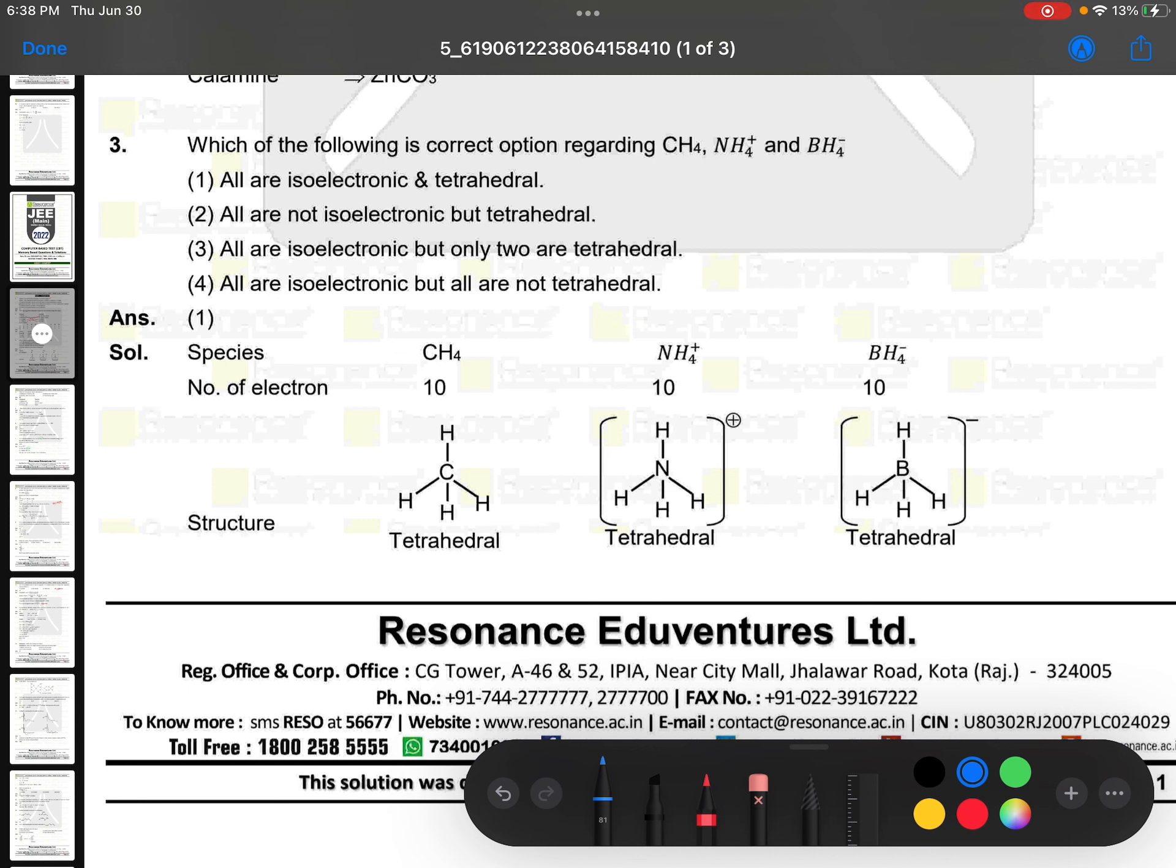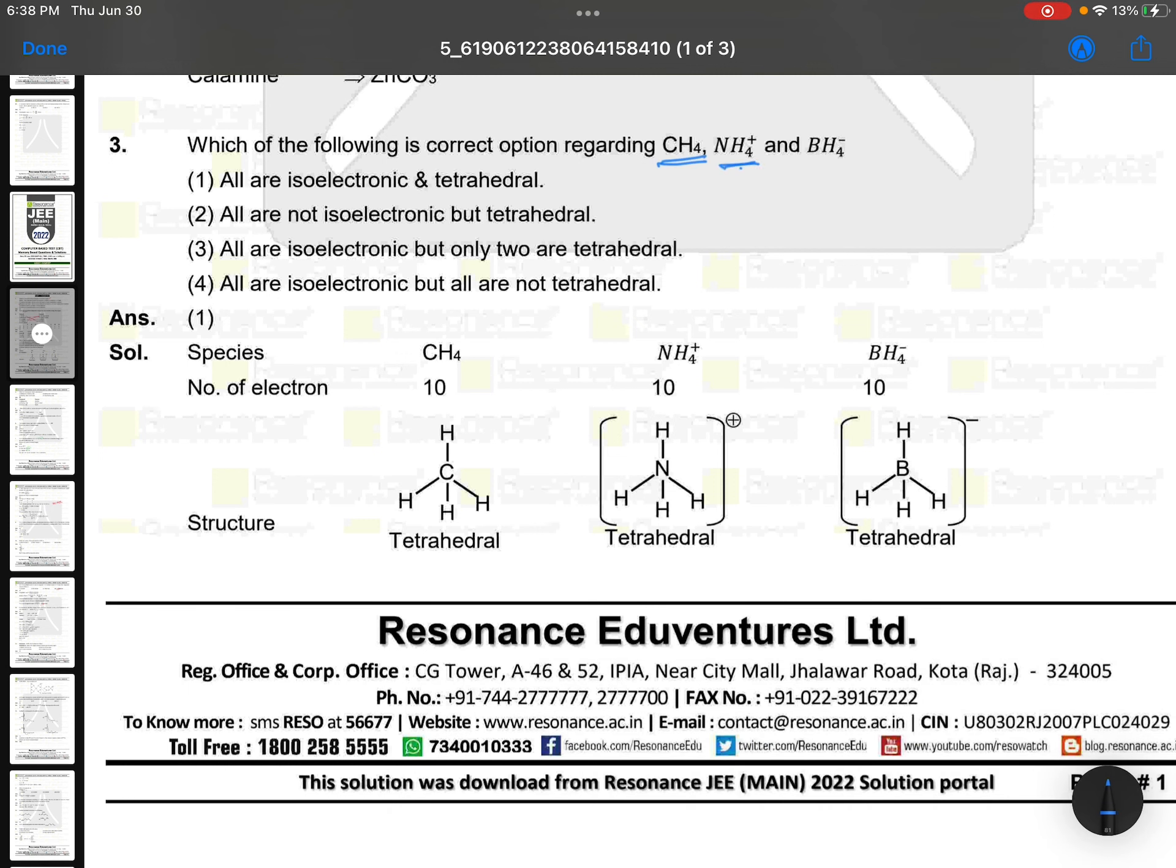Which of the following is correct option regarding CH4, NH4+, and BH4-? You can see it is having 10 electrons, it is having 10 electrons, it is having 10 electrons. So all are isoelectronic and tetrahedral.